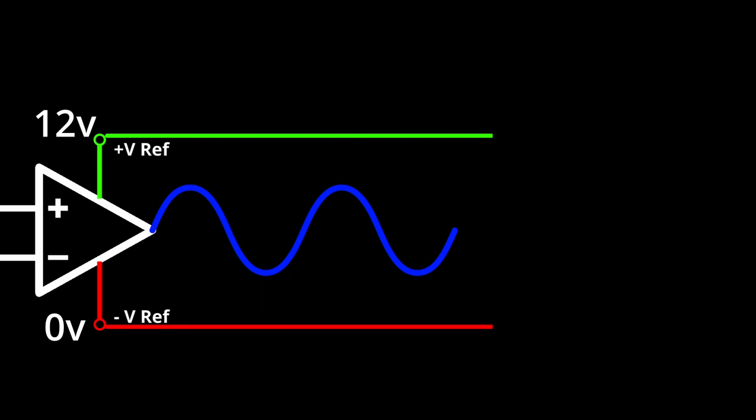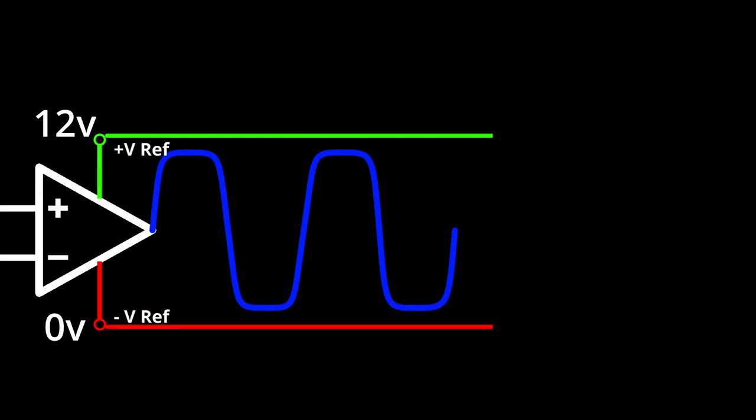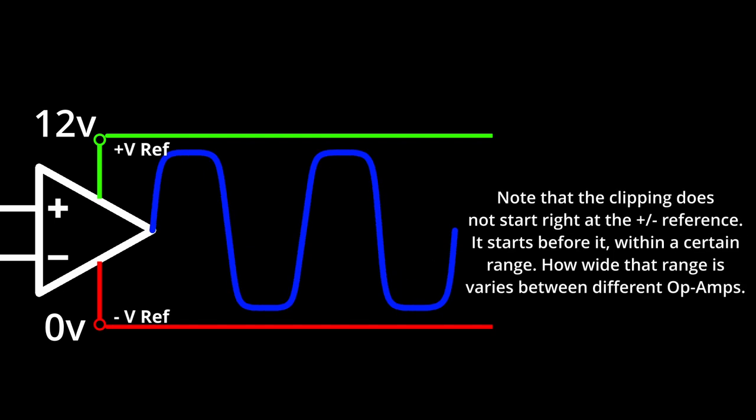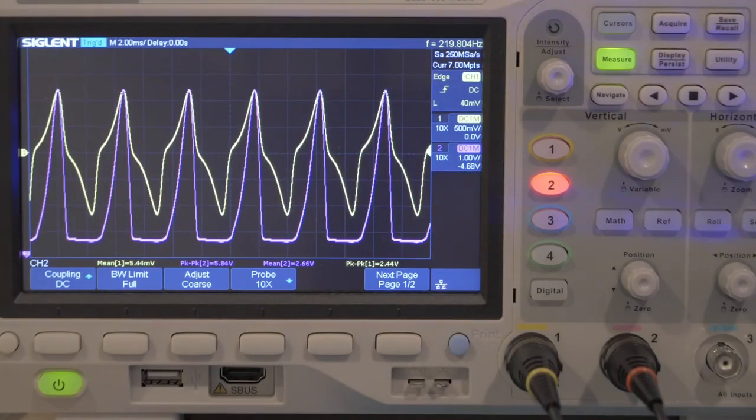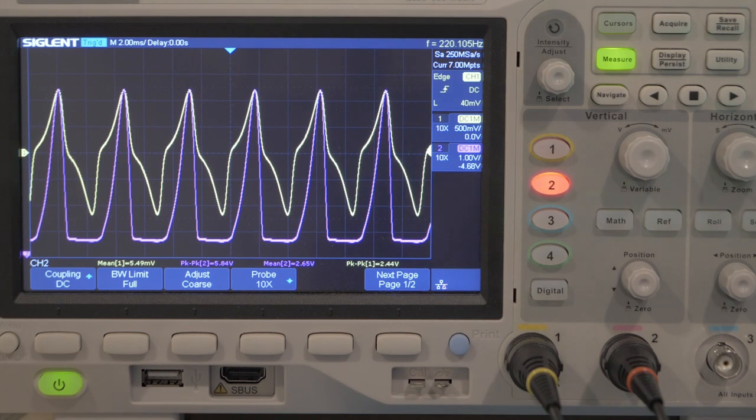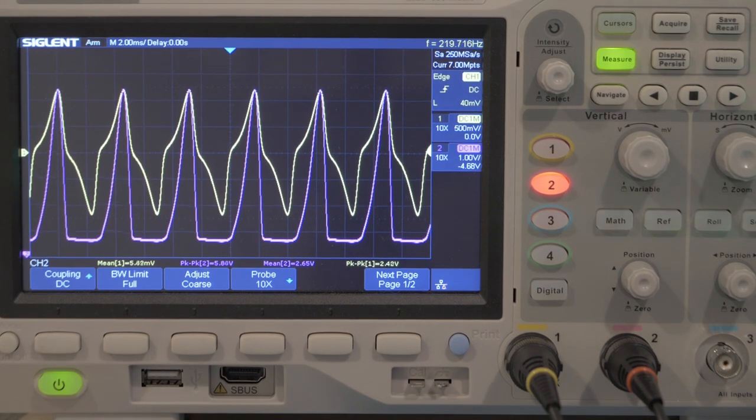This setup worked so long as the output of the op amp was staying far enough away from the 0 and 12 volt rails. Op amps can only amplify a signal within the range of these two reference points you provided. If you try to amplify a signal past 12 volts, or below 0, it won't work. It will start clipping the signal once the output gets too close to one of these rails.